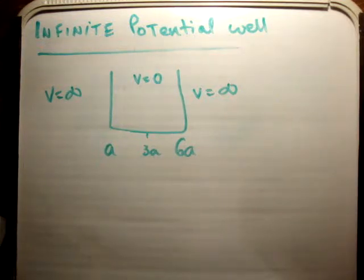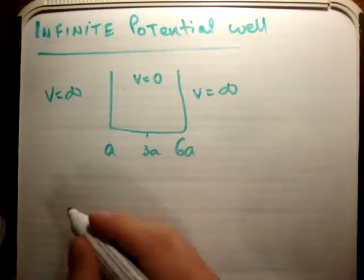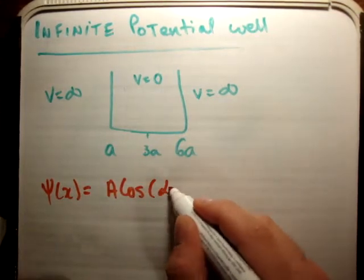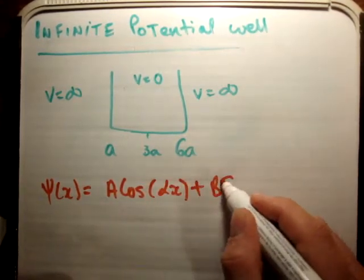Look, we can say it straight out. We know the solution to the time-independent Schrödinger equation in this case, and we know that ψ(x) is equal to A times the cosine of αx plus B times the sine of αx.